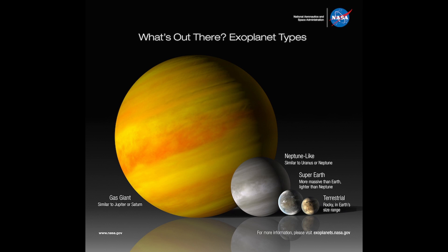Next are super-Earths. Super-Earths are like Earth in that they're rocky planets, but they're bigger than Earth — and they can be much bigger. Any rocky planet similar to a super-Earth but smaller than Earth is called a terrestrial planet. And that's basically it — those are the four types of planets, and that's how we categorize them when we look at all the planets in the universe.